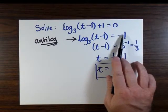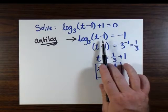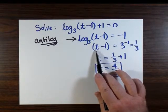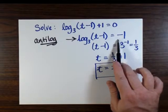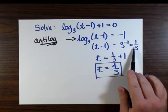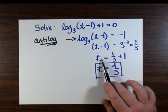Now, this time, we're just going to move the 1 over to the other side. We're going to take away 1 from both sides. And just like last time, we're taking the antilog of both sides. But this time, instead of a base 10, we're going to take a base 3.